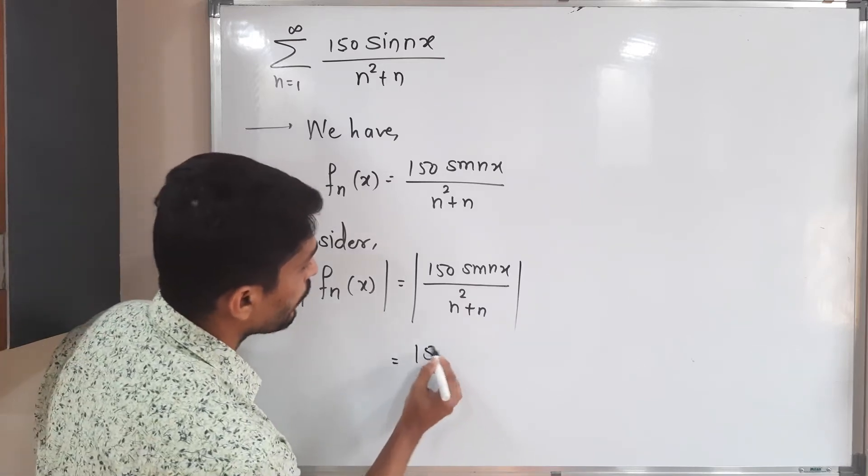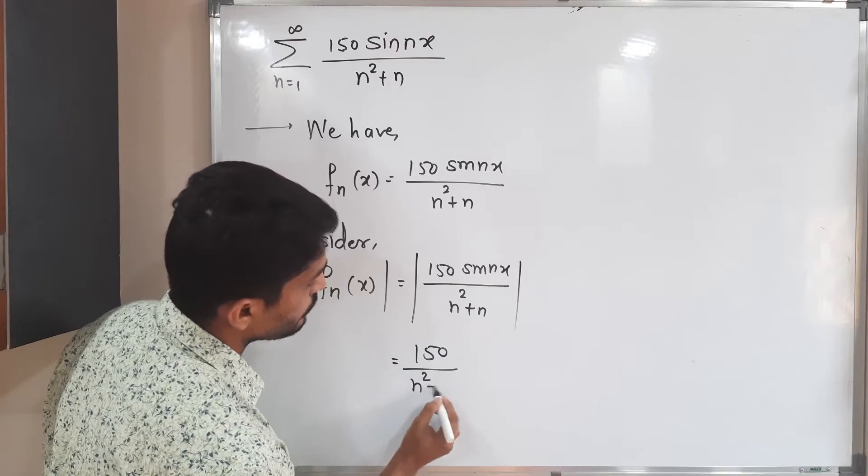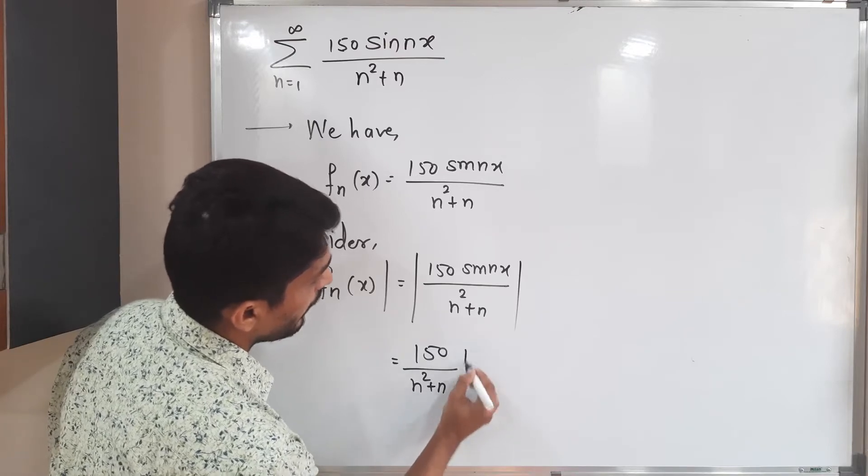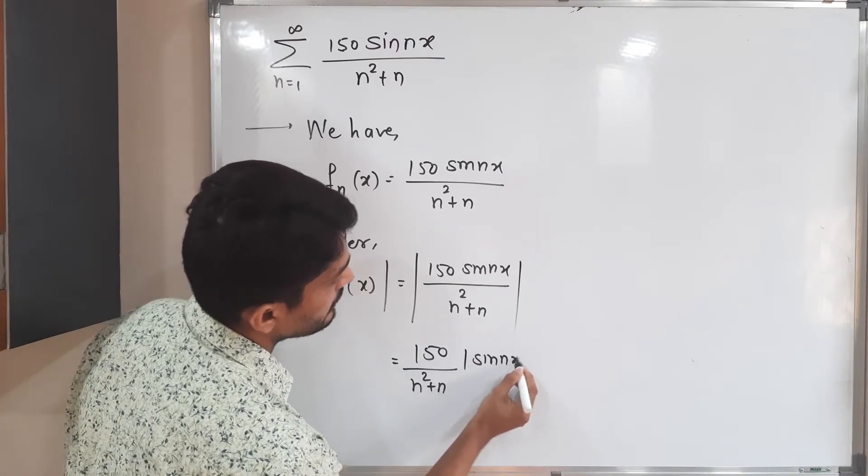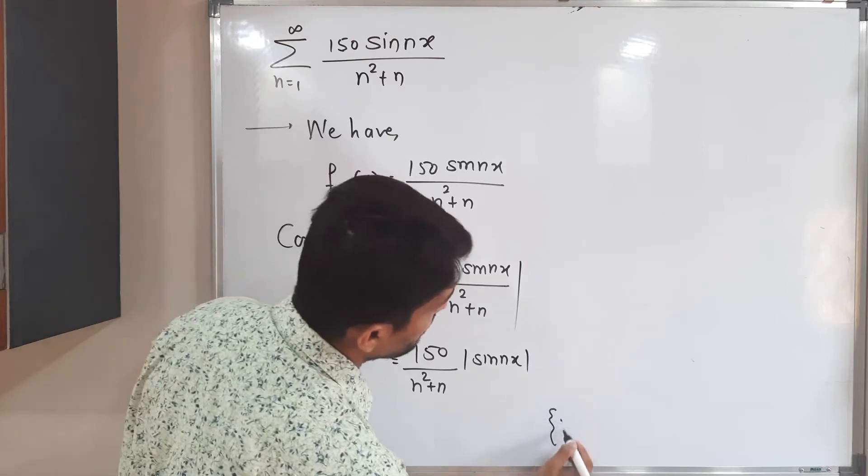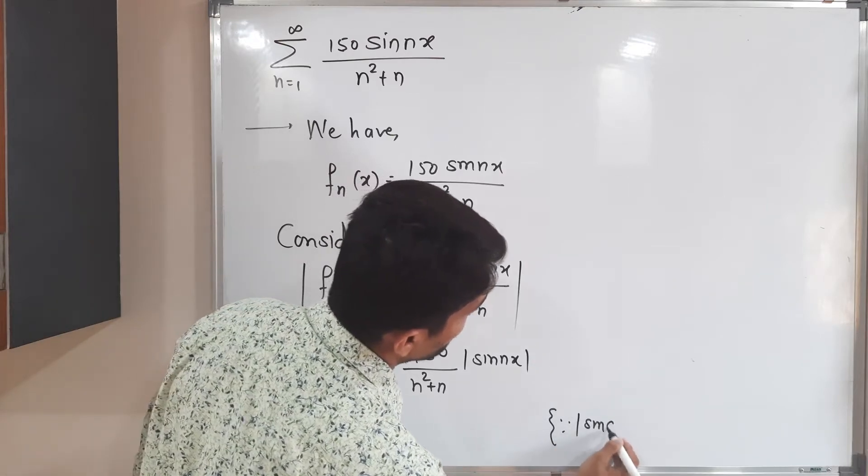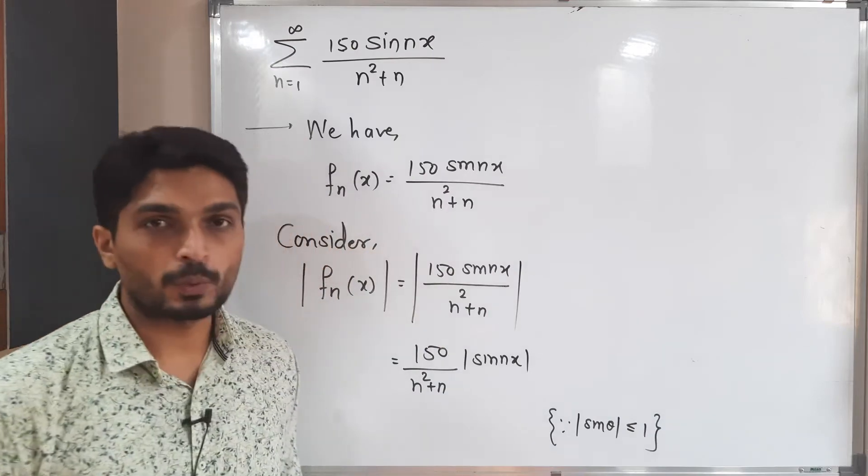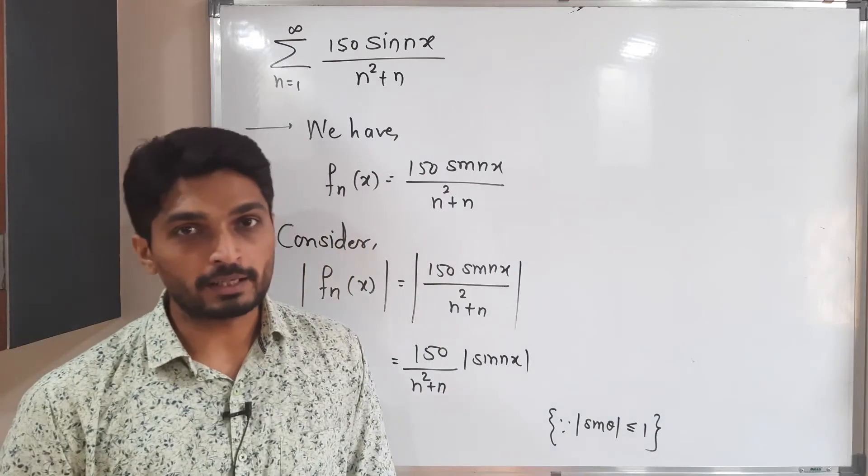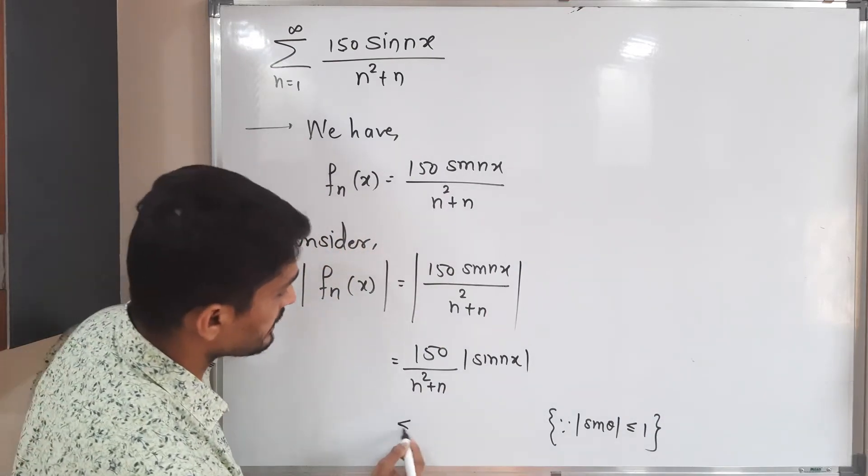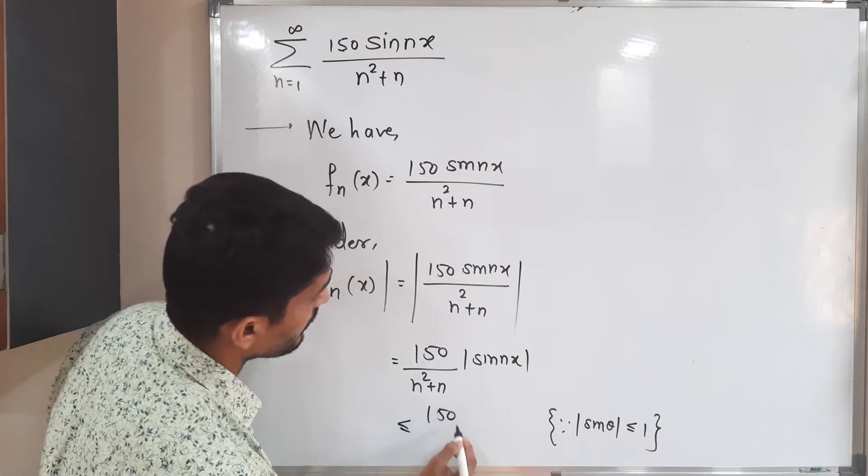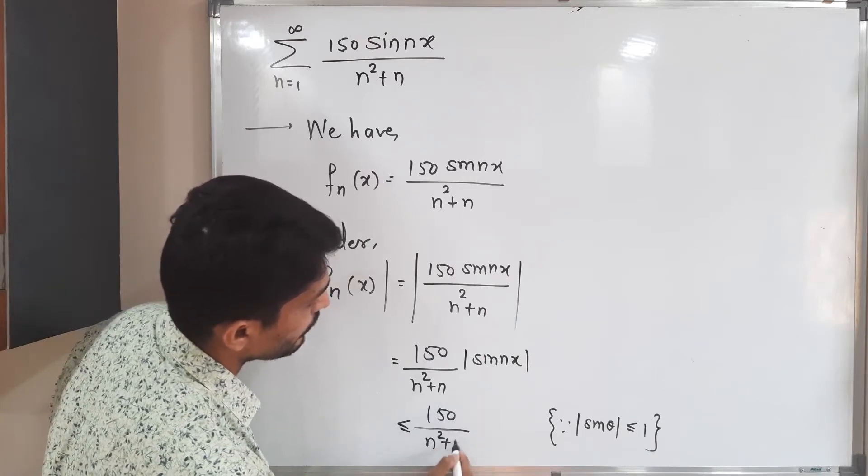So this is equal to 150 divided by n square plus n times mod sine nx. But I hope you are familiar with this thing: mod sine theta is always less than or equal to 1. So let us apply that inequality here.